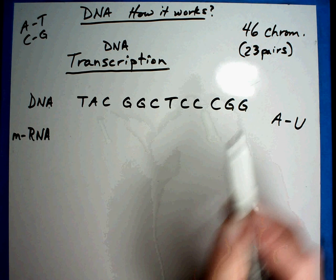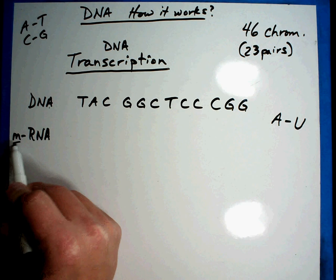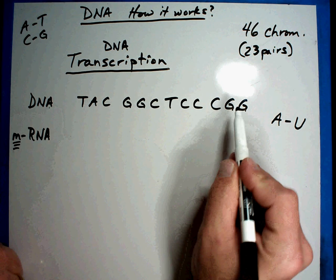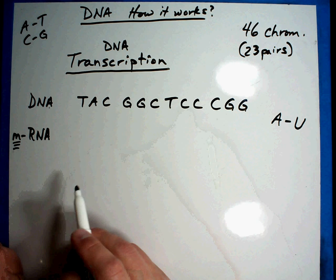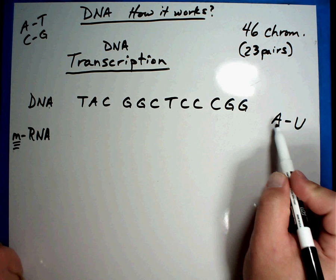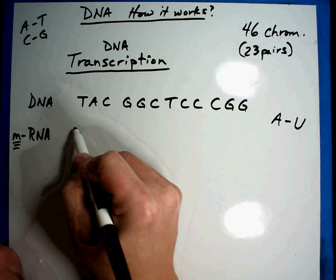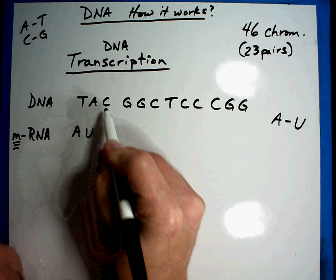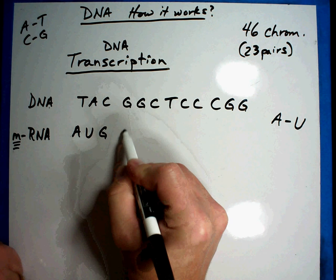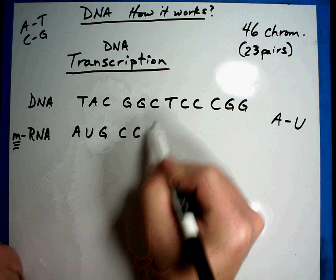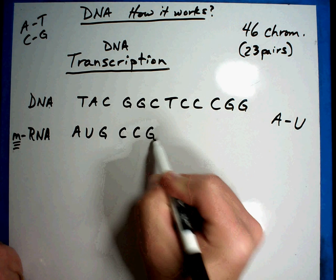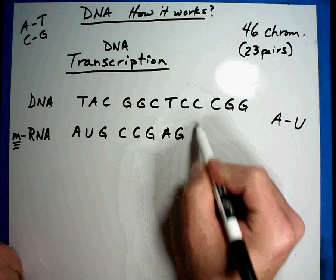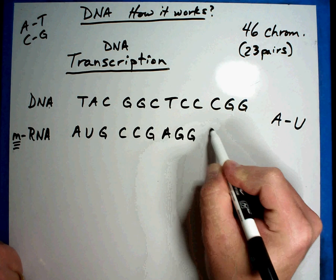The messenger is going to carry part of the DNA, and it's going to be in secret code. So let's figure out the secret code, remembering A's go with U's. T goes with A, A goes with U - that's the new rule. C goes with G, G goes with C, G goes with C, C goes with G, T goes with A, C goes with G, C goes with G, C goes with G again, G goes with C, and G goes with C.